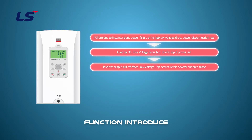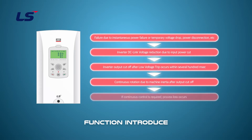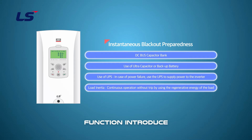The output of the inverter is cut off, but due to the inertia of the load, the motor continues to rotate for a certain period of time. If continuous control is required through the inverter, this input power interruption will result in process losses. Therefore, it is necessary to prepare for an instantaneous power failure.